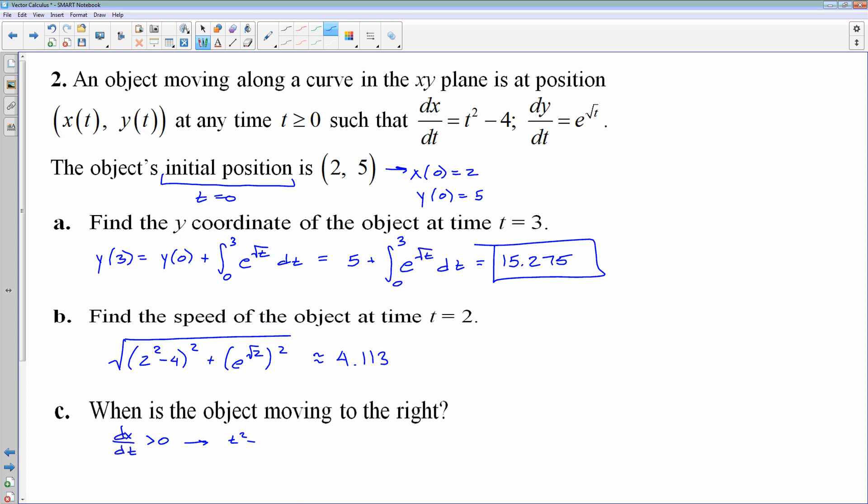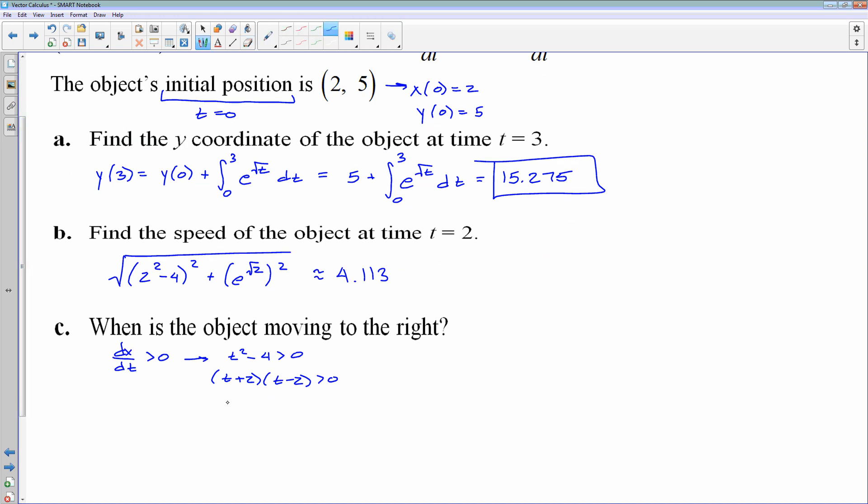And something's going to move to the right. Let's see, my dx/dt is t² - 4. I'm simply going to find out when t² - 4 is greater than 0. I'll factor it. (t + 2)(t - 2). I know that's going to equal 0 at negative 2 and positive 2.